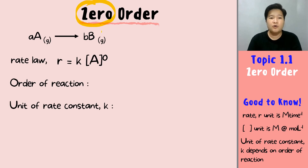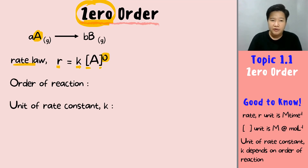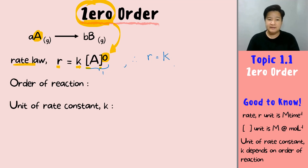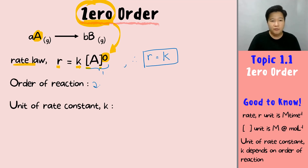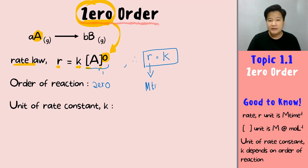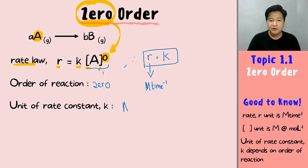Let's look at zero order first. For zero order, the rate law is r = k × [A]⁰. Since anything to the power of zero equals one, this simplifies to r = k. So for zero order, the rate law is simply rate equals k. The order of reaction is zero. What is the unit of the rate constant k? Knowing that r equals k, and the unit of r is M/time (concentration over time), the unit of the rate constant k is therefore molar per time.